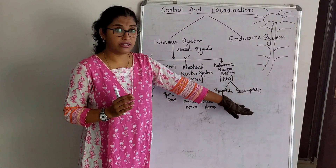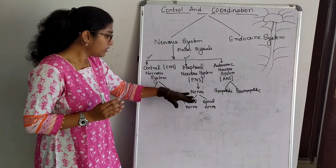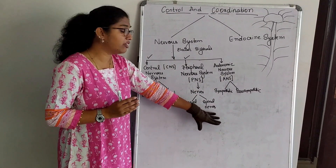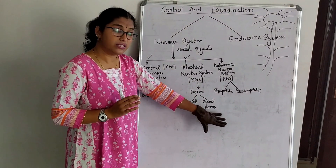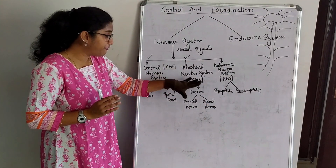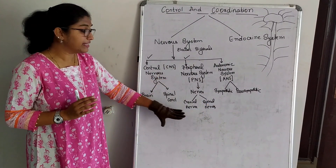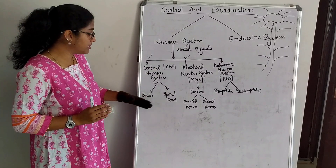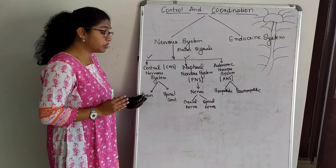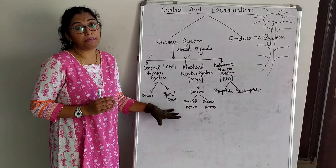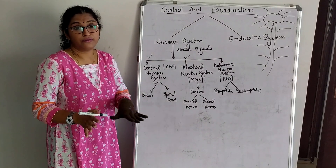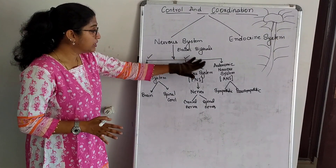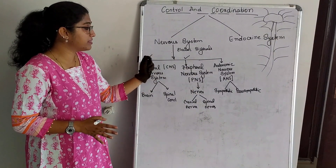We don't study the autonomic nervous system in our syllabus. We don't study cranial or spinal nerves either. We only classify them; for 10th grade we study only brain and spinal cord under the Central Nervous System. This is nervous system.